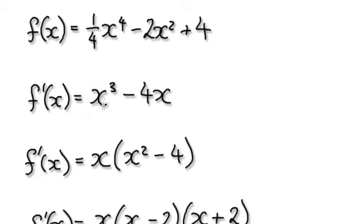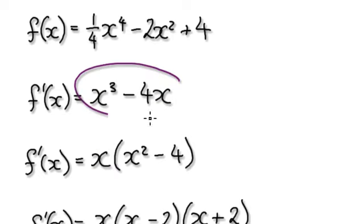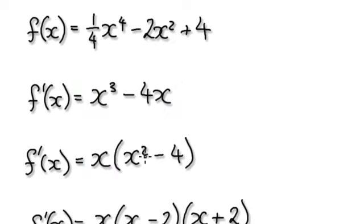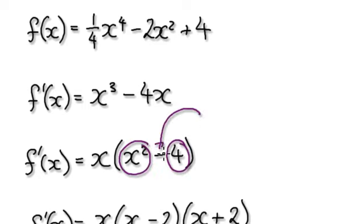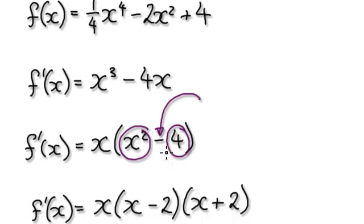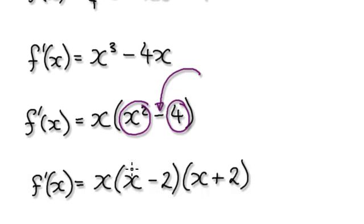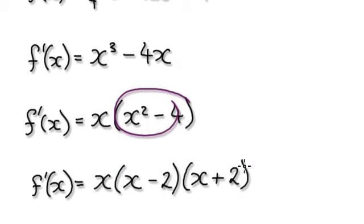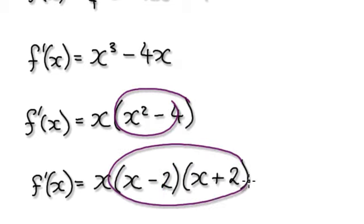When you look at this, you can see that x is in common here and x is in common here, so we factor out the x. This thing here becomes this. And then whenever you have something that's easily square rootable and there happens to be a minus in between, you can jump straight to x plus 2 and x minus 2. So this thing here becomes this thing here.